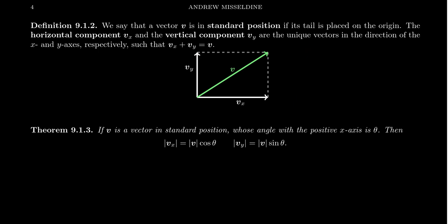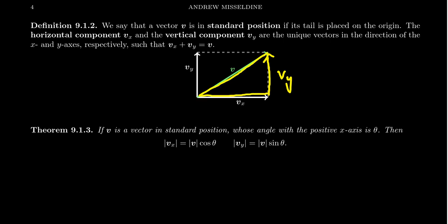With this parallelogram rule, we can move vy over here. If we put vy on this side instead, we now have a right triangle. Using right triangle trigonometry, we can relate together the vector quantity v with its two components vx and vy.